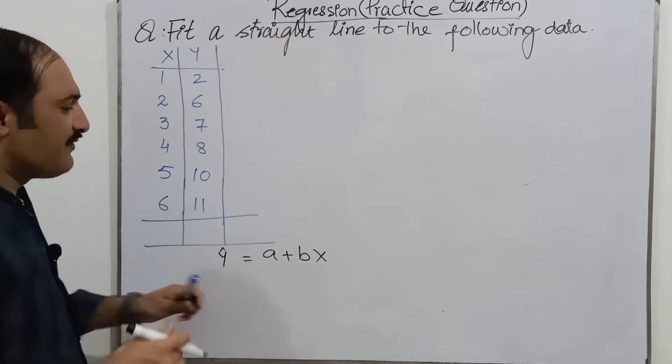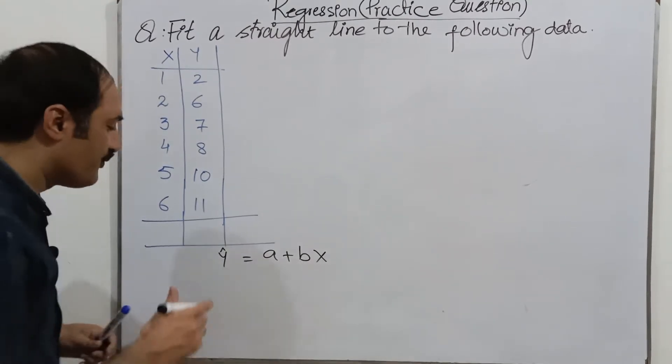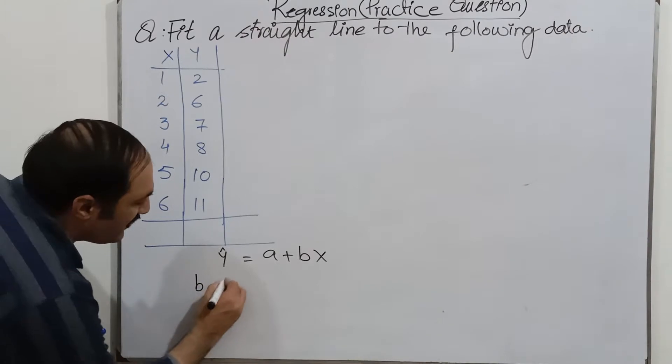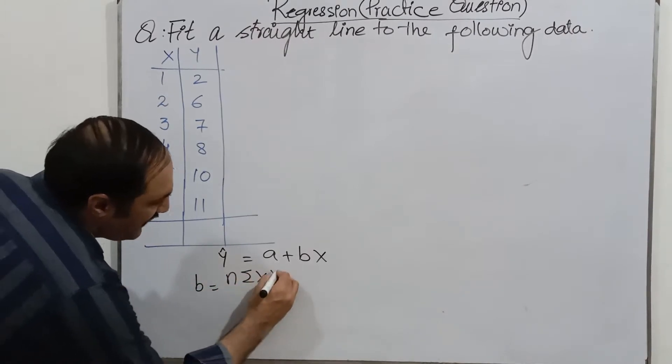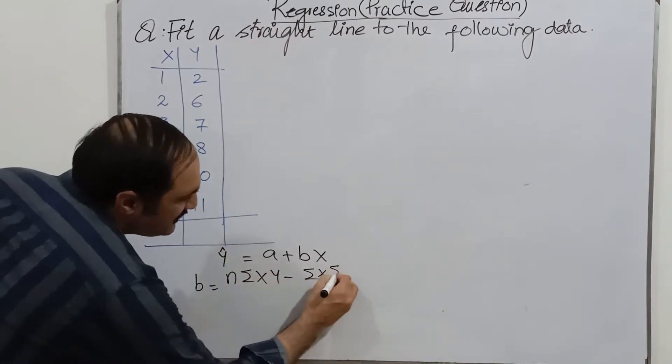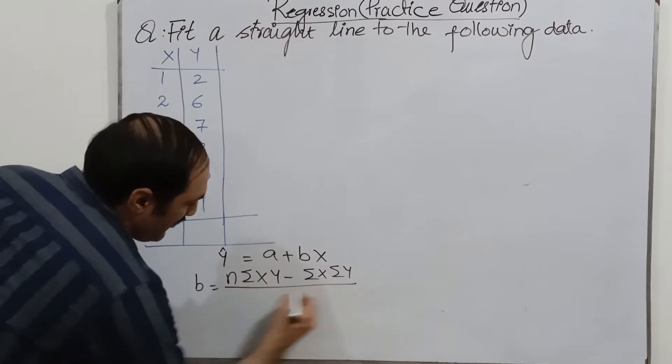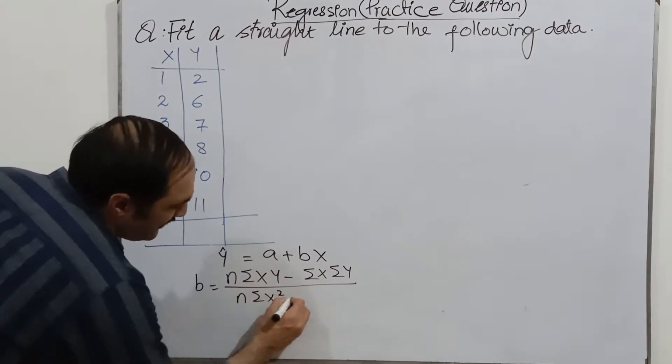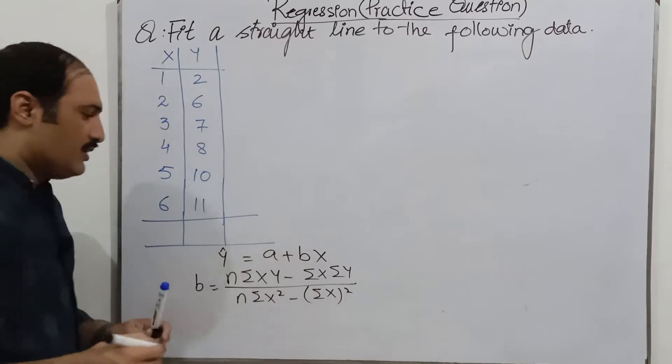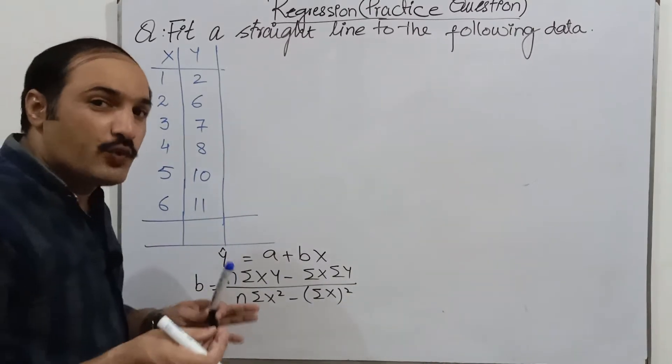So first of all we discuss about the slope formula. What is slope formula? b is equal to n summation xy minus summation x summation y over n summation x square minus summation x whole square. So here what are the requirements?